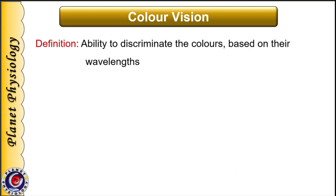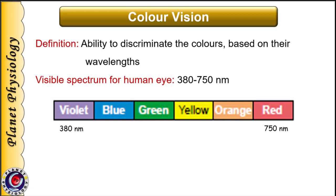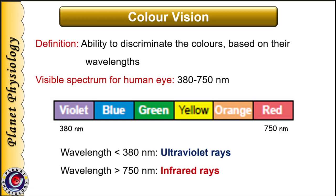Color vision is defined as the ability to discriminate colors based on their wavelengths. Out of the vast electromagnetic spectrum, the human eye can see a narrow band of light in the range of 380 nm to 750 nm, i.e., from violet to red color. Wavelengths less than 380 nm are called ultraviolet rays and more than 750 nm are known as infrared rays. Both these are not visible to the human eye.